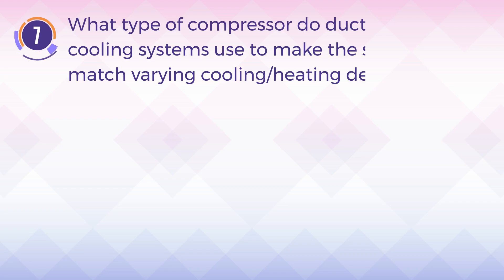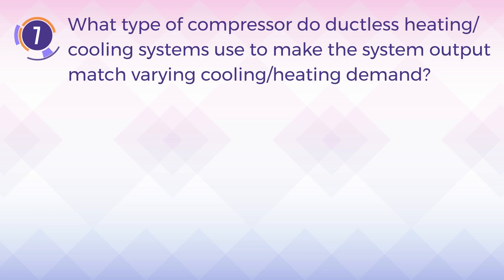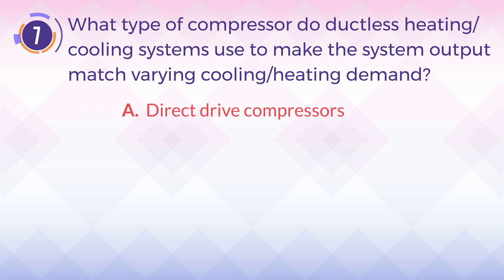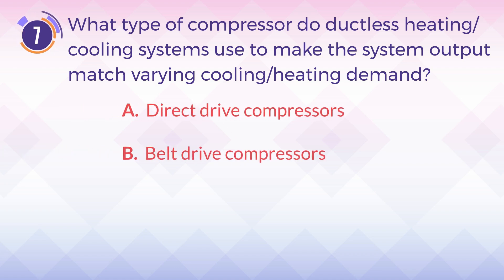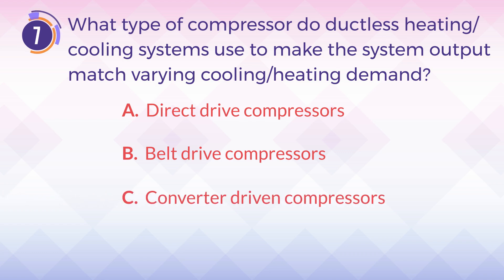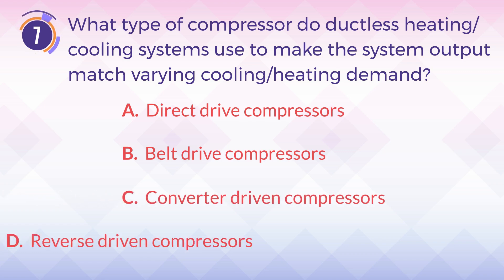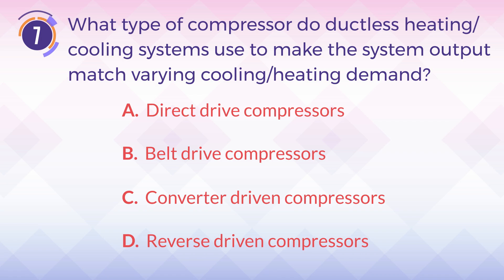Number 7. What type of compressor do ductless heating or cooling systems use to make the system output match varying cooling or heating demand? A. Direct-drive compressors. B. Belt-drive compressors. C. Converter-driven compressors. D. Reverse-driven compressors.